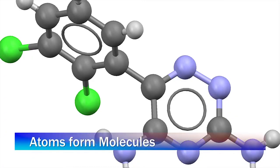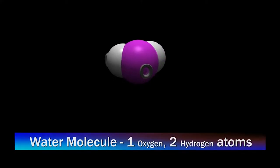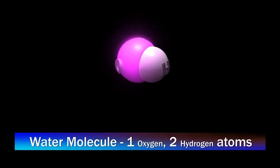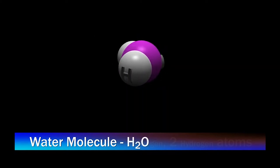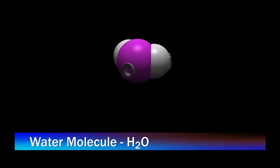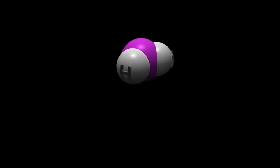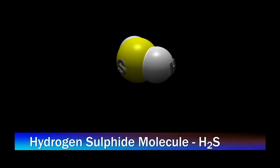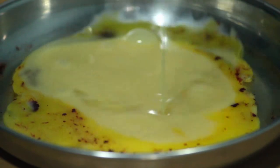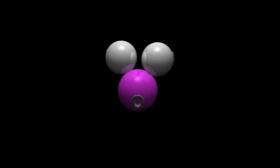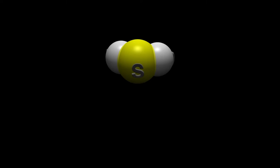Atoms bond to form molecules. The water molecule is made up of one oxygen atom and two hydrogen atoms, so it is called H2O. It has a particular shape because of the angle of bonding. If we replace the O atom with another atom S — called sulfur — we get another molecule called H2S. H2S is a gas with the smell of rotten eggs. All we did was replace O with S. Simple.